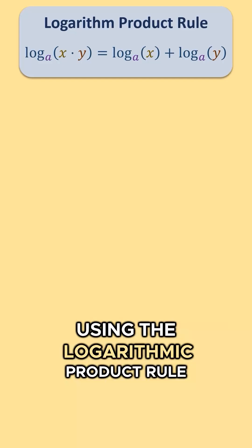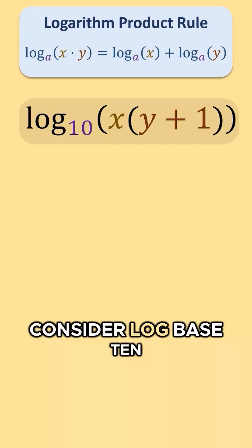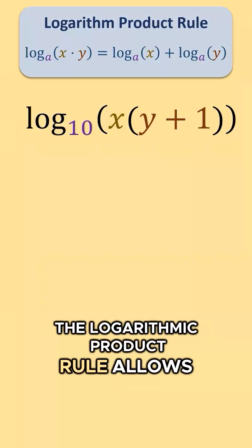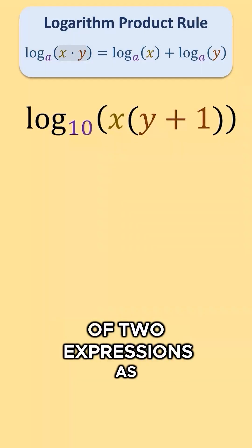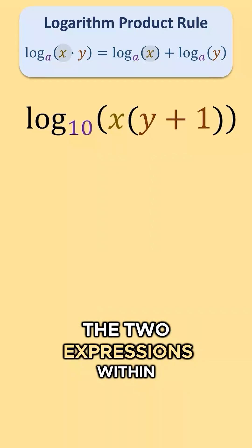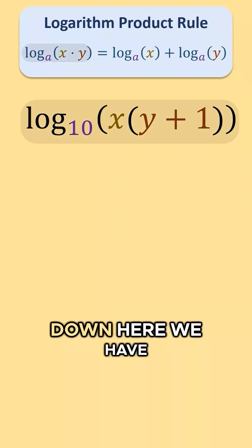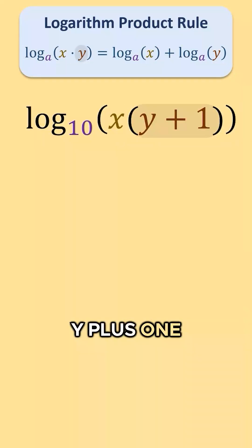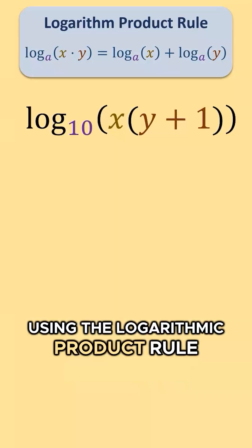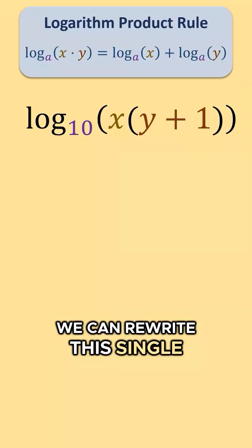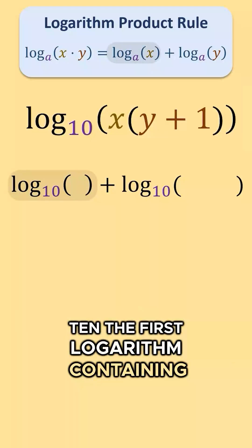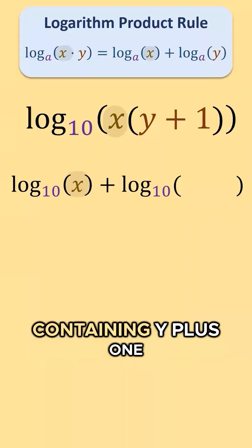Now, a quick example using the logarithmic product rule. Consider log base 10 of x times the quantity y plus 1. The logarithmic product rule allows us to rewrite a product of two expressions as the sum of two separate logarithms, each containing one of the two expressions. Within our logarithm we have x times the quantity y plus 1 — a product of x and y plus 1. Using the logarithmic product rule, we can rewrite this single logarithm as the sum of two logarithms with the same base, base 10: the first containing x and the second containing y plus 1.